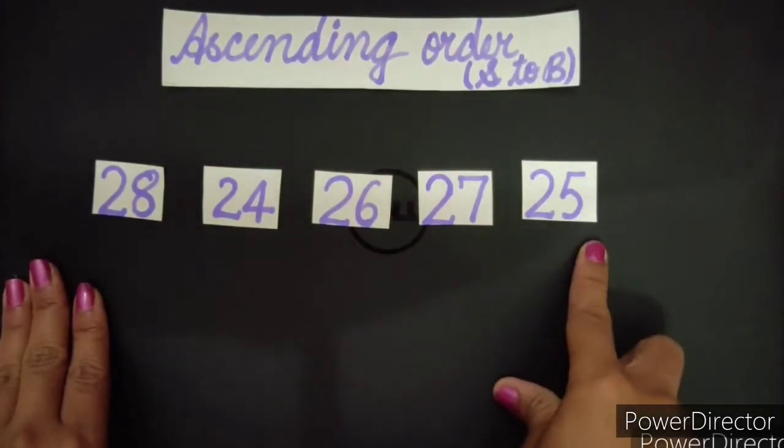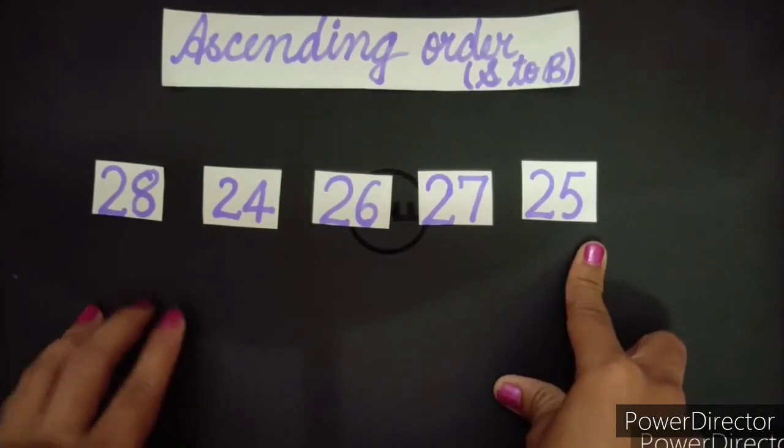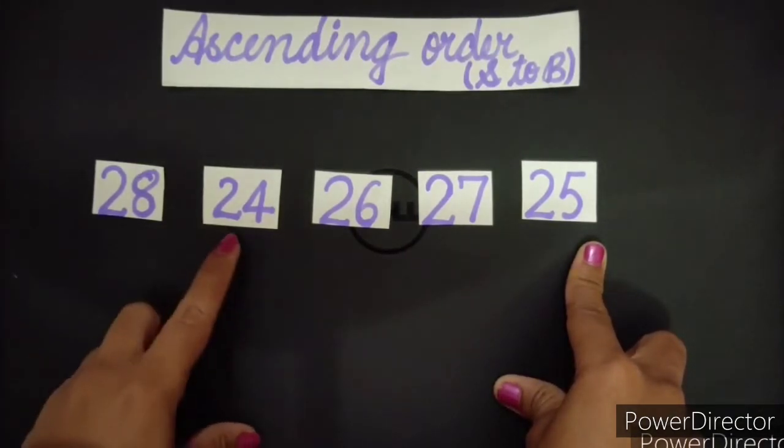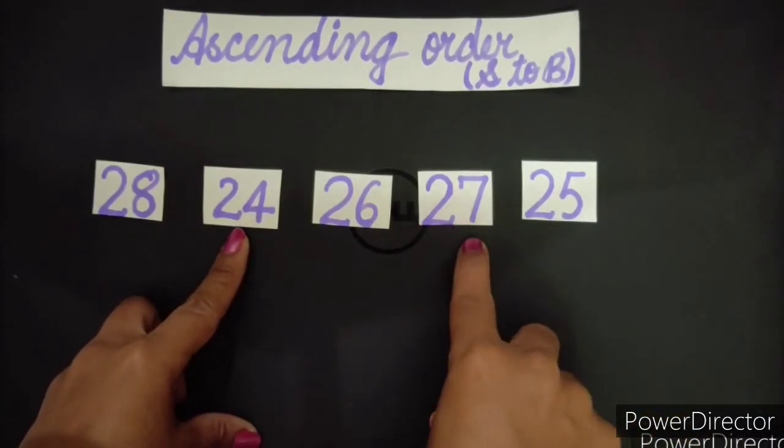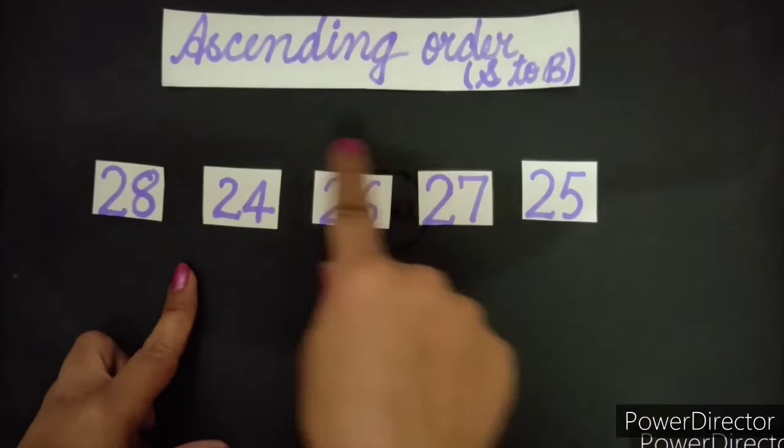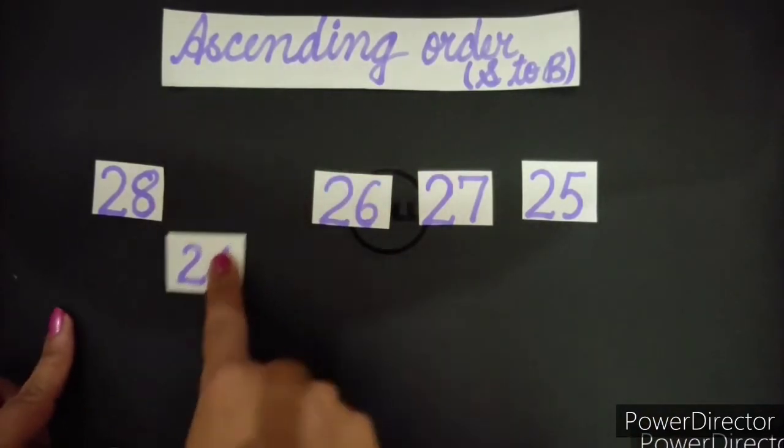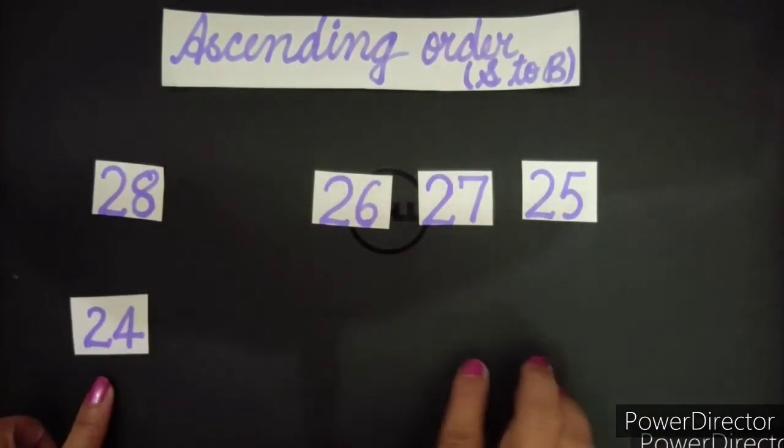Okay, so out of all these numbers, which one is the smallest? Is 28? No. Is 24? Let's see. 26? No. 27? No. 25? No. So the smallest number among all is 24. Let's bring it down.